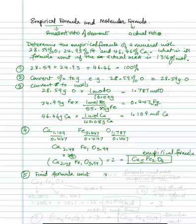And so to get that number N, it's going to be the formula unit mass divided by the empirical formula mass. So the formula unit mass is given to us, which is 1,316. We need to find the empirical formula mass. So for calcium 5, iron 2, oxygen 8, you do the whole calculation.